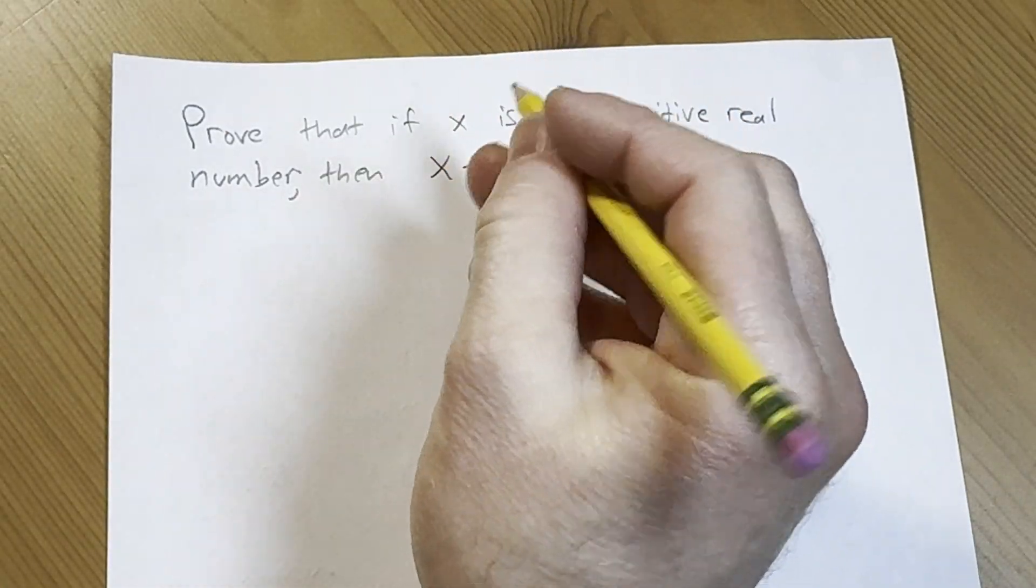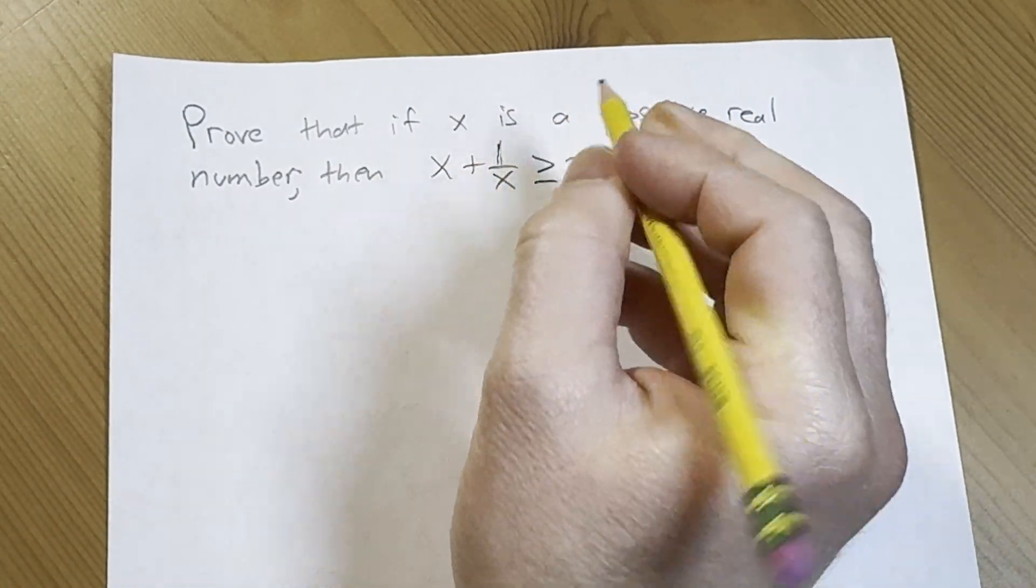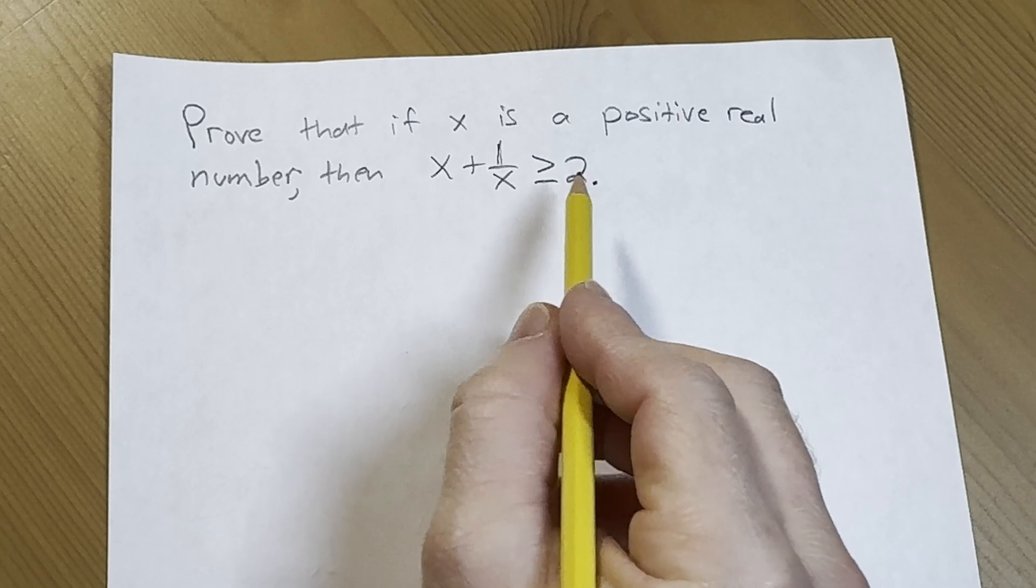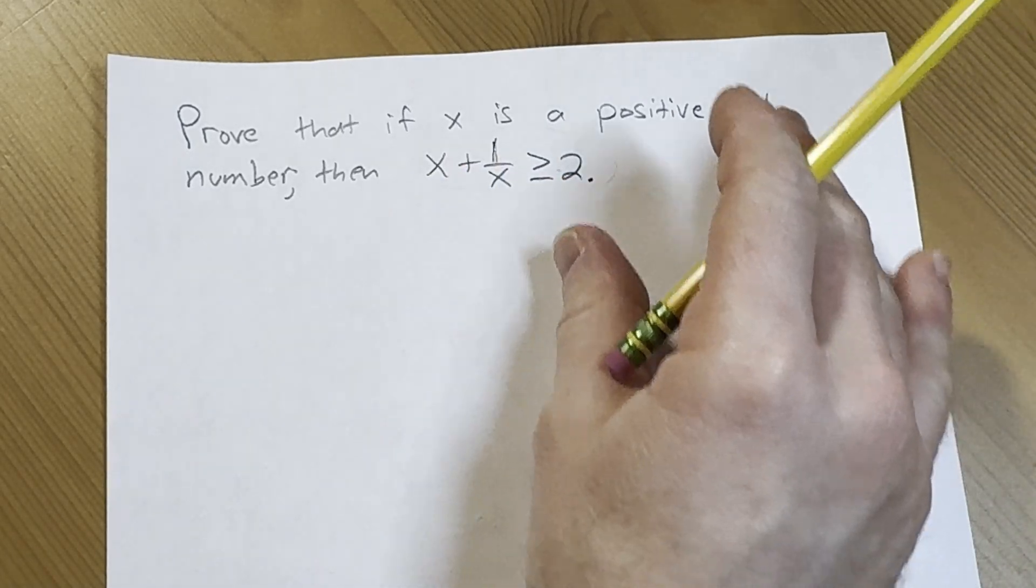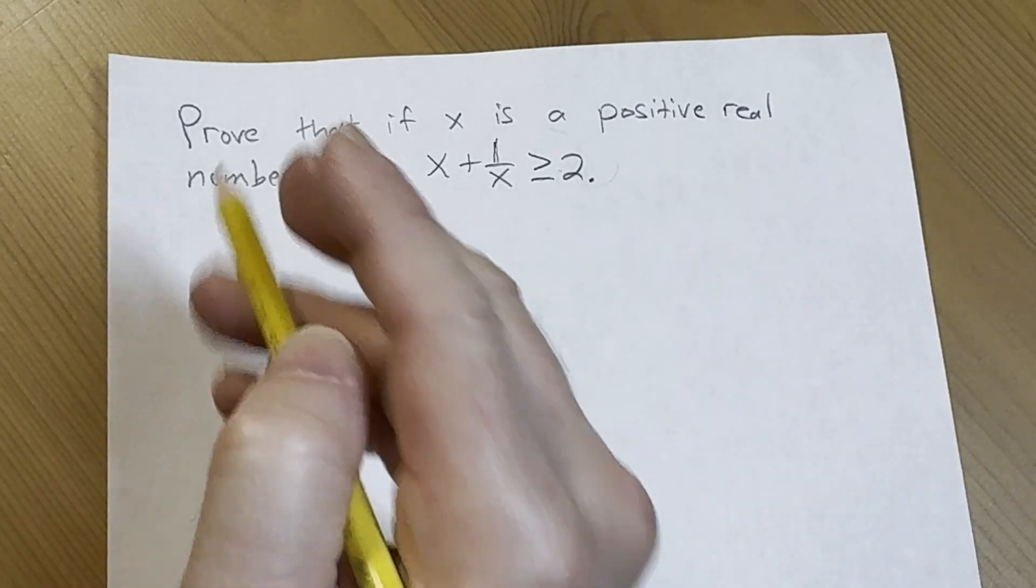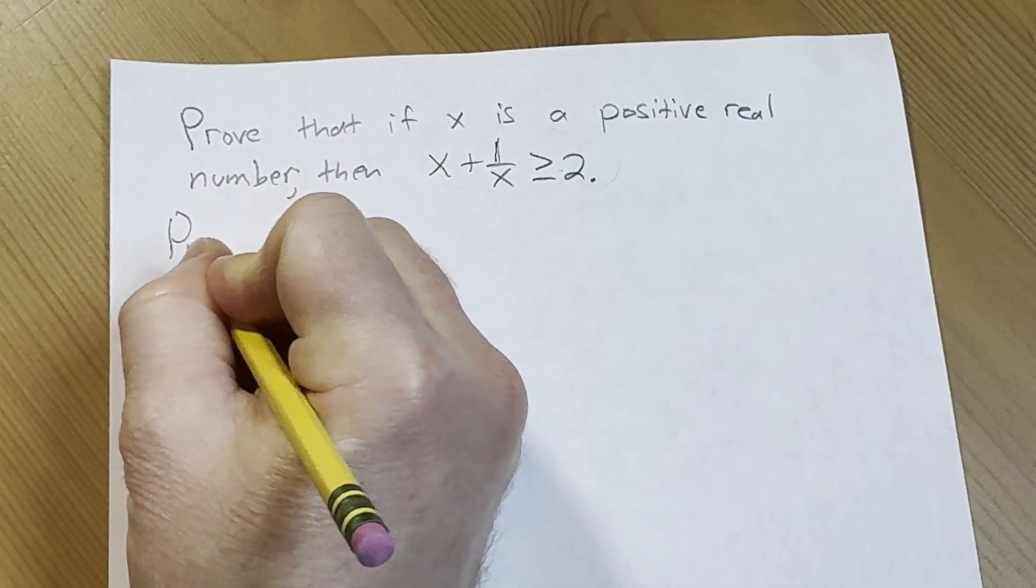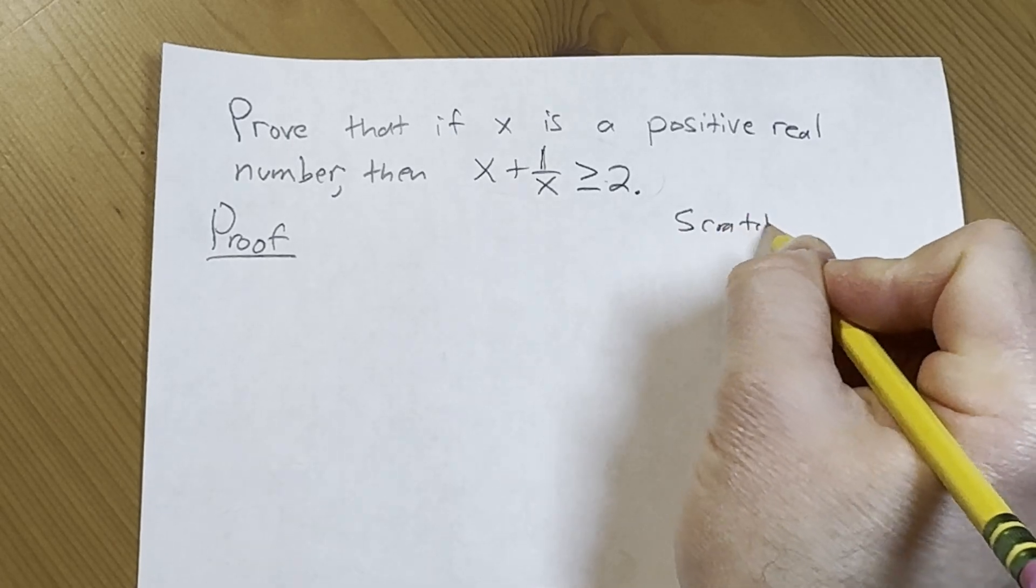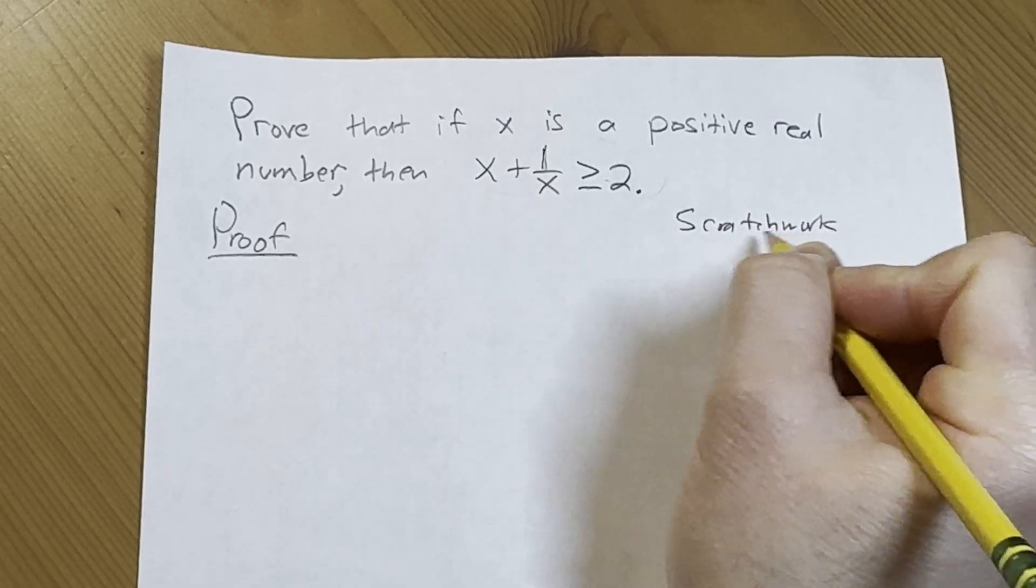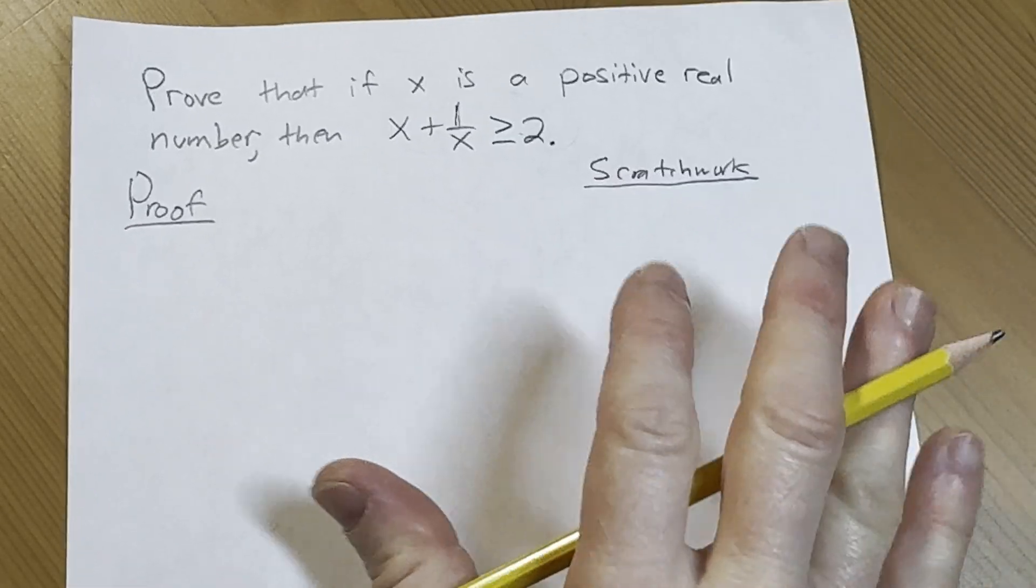Now to prove this what we're going to need to do is I think work backwards. So what I'm thinking is we're going to start with this and do some scratch work and see if we can find an equivalent algebraic expression and then start from that. So this is the scratch work.